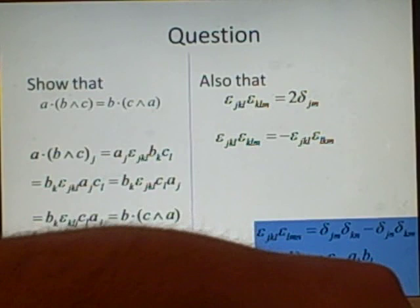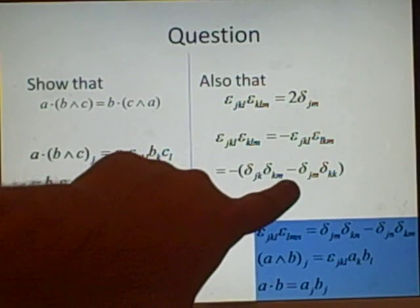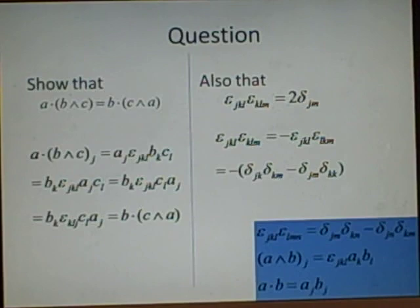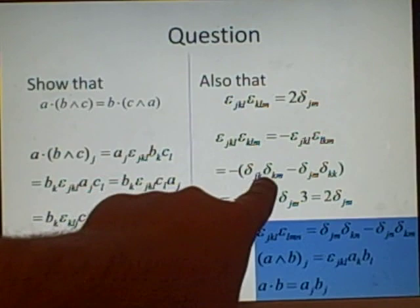And then we can write this in a form like this. I've just put the minus outside and we've got delta jk delta km minus delta jm delta kk. And like we've said in the original Kronecker delta slide, if it's repeated, then it will equal three. So we'll have a three.